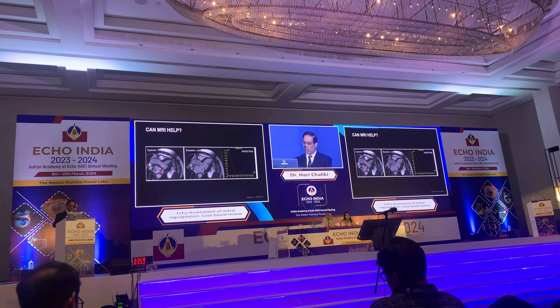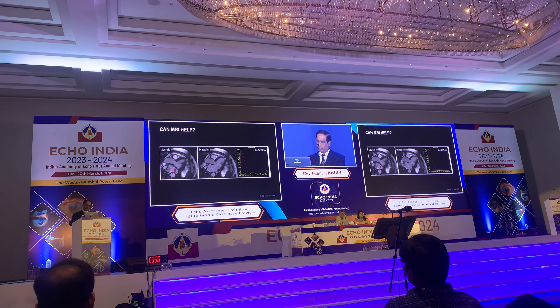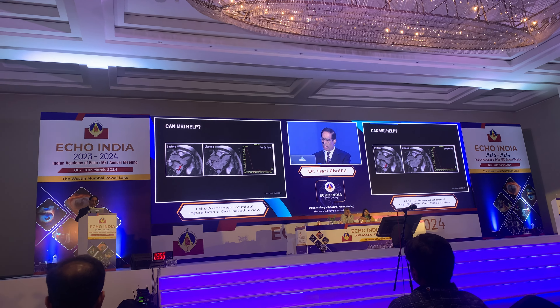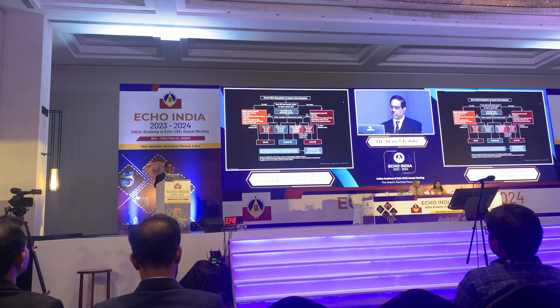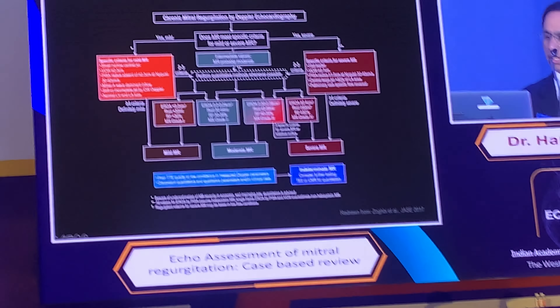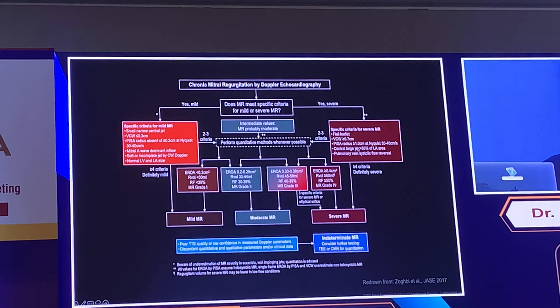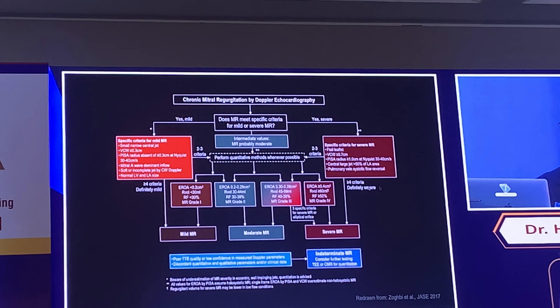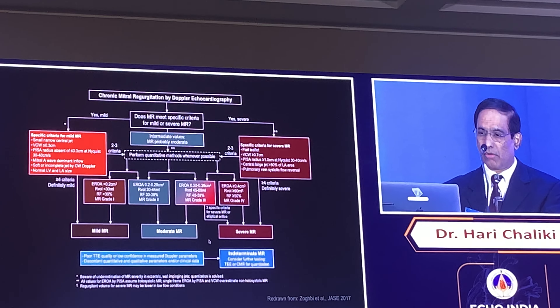If all else fails, MRI using phase contrast velocity encoding can be used as a gold standard to determine regurgitation volume. There are specific ASE guideline criteria for what constitutes severe MR. If the patient does not meet those criteria, you need to quantitate further, or perform TEE or MRI if in doubt.